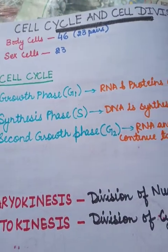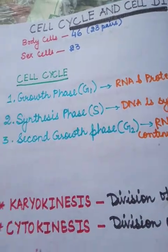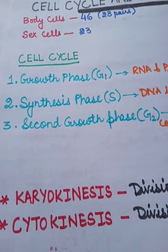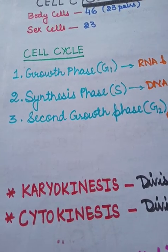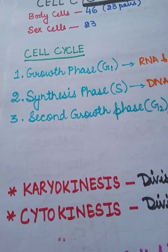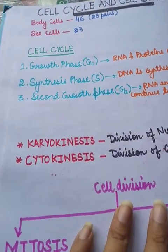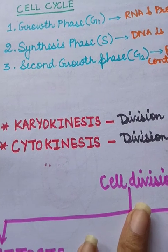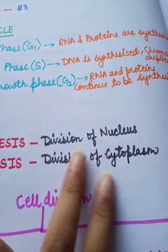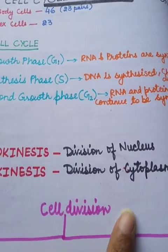In this chapter, we are going to discuss the cell cycle. The cell cycle comprises three main phases: the first growth phase known as G1, the synthesis phase known as S, and the second growth phase known as G2. Now let us come across two new words: karyokinesis and cytokinesis. Karyokinesis is the division of the nucleus, while cytokinesis is the division of the cytoplasm.